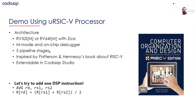Let's see how this works in real life. For the demo, we'll use the URISC-V processor — a CPU that comes with Studio implementing the basic RISC-V architecture with five pipeline stages, heavily inspired by the Patterson and Hennessy book. It comes with RV32IM or RV64IM with ZICSR, including privilege mode, M-mode, and a debug interface. We'll use it as a baseline and add one DSP instruction: the average instruction, which takes two source operands and produces their average value.